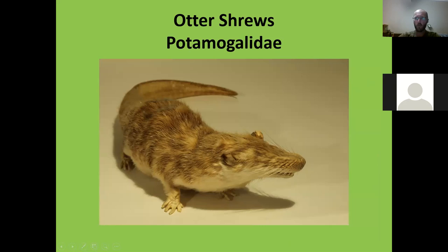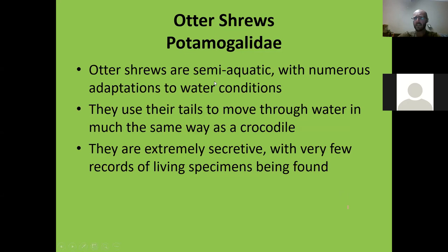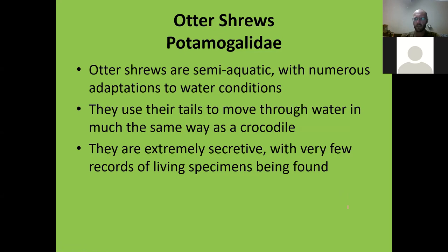Otter shrews are something really weird — I've never seen one in my entire life because I've never had the good fortune of working in central Africa. Most people don't know these animals exist. The largest gets about 60 centimeters long. They are semi-aquatic with numerous adaptations to water: thick impermeable coats, a layer of fat, rudder-like tails, and reduced eyes. They swim through the water just like a crocodile, using their tail as a rudder, and are extremely secretive with very few records of living specimens.